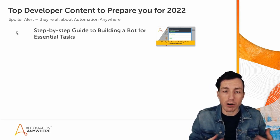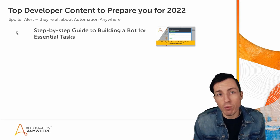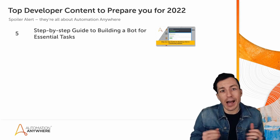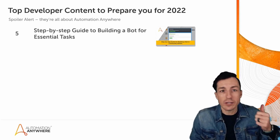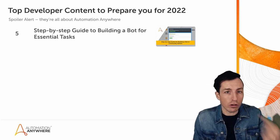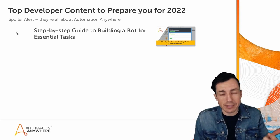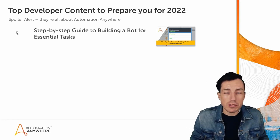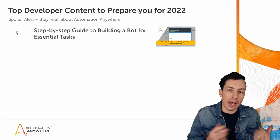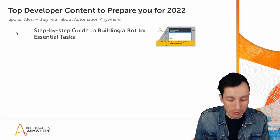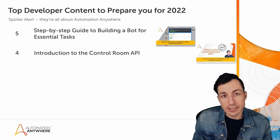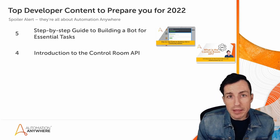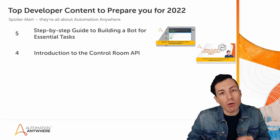If you haven't built many bots in Automation 360, this is a great one to get started with. It goes through the process of teaching you exactly how to build a bot to download a CSV, read data from that CSV, enter it into a web form, and submit. So you're learning some of the core fundamental skills that can help you in your RPA journey.